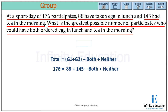The question asks for the greatest possible number who could have ordered both. To get the maximum value of both, I need to decrease neither to its minimum possible value, which is zero. So if neither equals zero, then both equals 88 plus 145 minus 176 plus 0, which is 233 minus 176, equals 57. The moment I increase the neither value, the both value decreases. So to get the maximum value for both, neither is minimized to zero, giving us both equals 57.